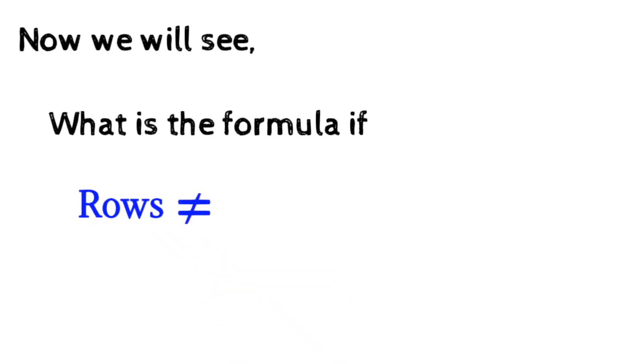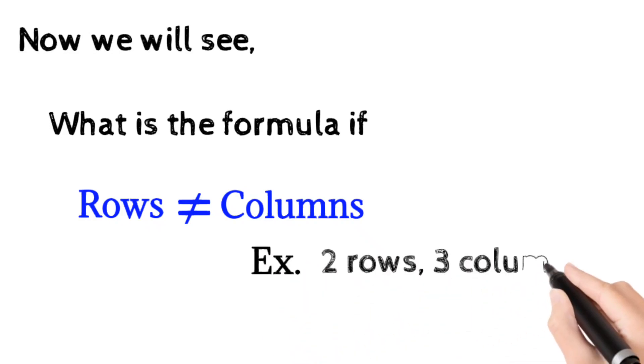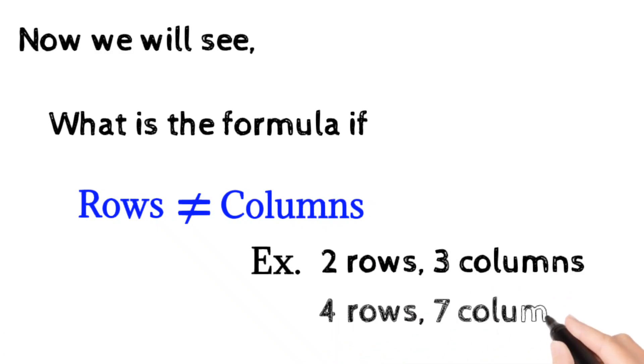Now we will see what is the formula if rows are not equal to columns. That means the number of rows and columns are not the same. For example, if you have 2 rows and 3 columns, or 4 rows and 7 columns, etc.